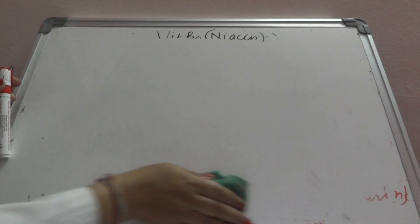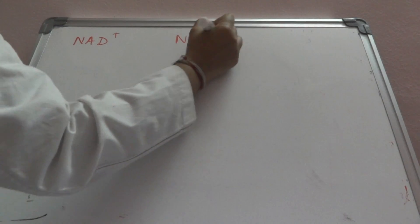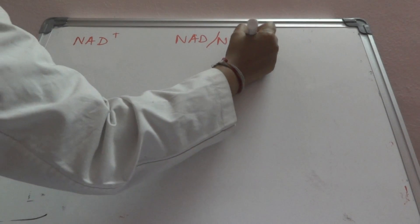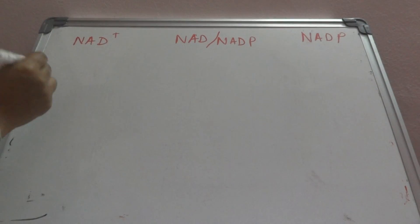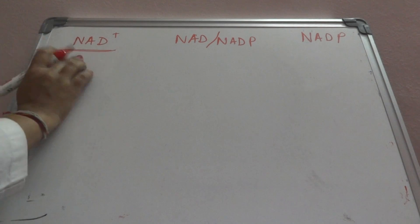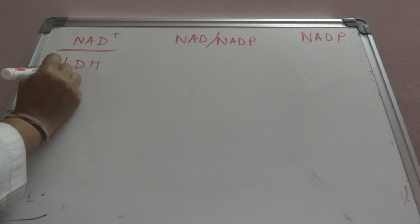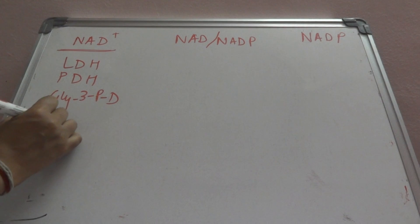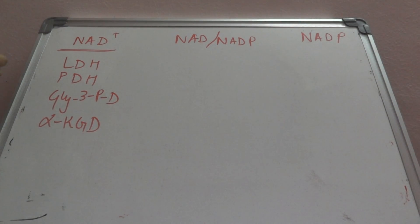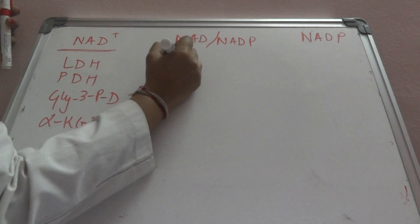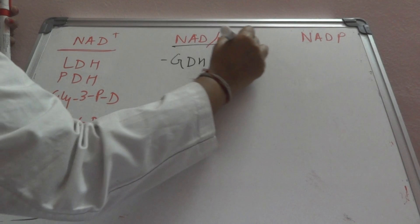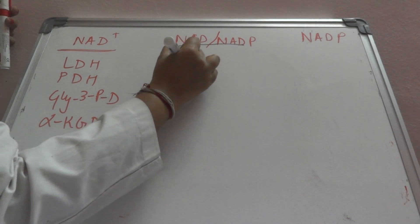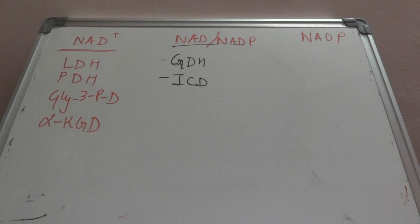Now seeing the biochemical functions where NAD and NADP+ are used: NAD+ is mostly used in carbohydrate metabolism — lactate dehydrogenase, pyruvate dehydrogenase, glyceraldehyde-3-phosphate dehydrogenase, and alpha-ketoglutarate dehydrogenase. NAD and NADP+ can both be used by only two enzymes: glutamate dehydrogenase and isocitrate dehydrogenase.